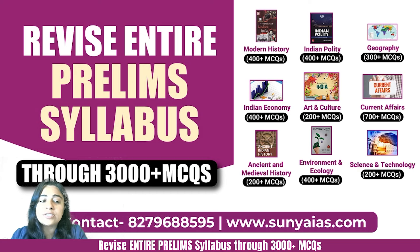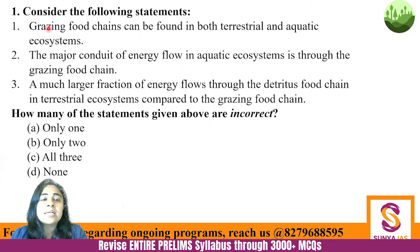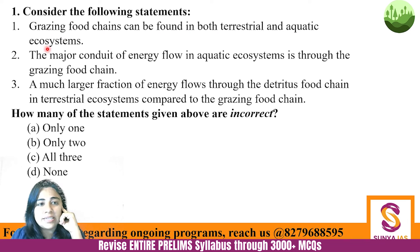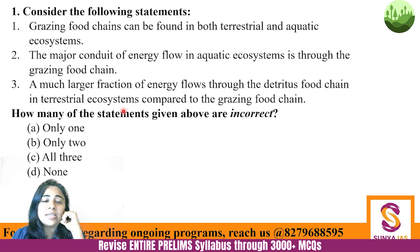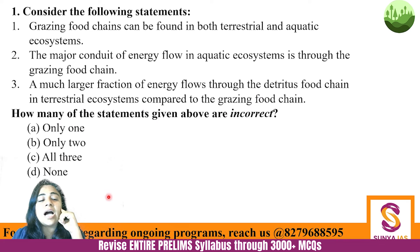Now let's start with the very first question. Consider the following statements: Grazing food chains can be found in both terrestrial and aquatic ecosystems. The major conduit of energy flow in aquatic ecosystem is through the grazing food chain. A much larger fraction of energy flows through the detritus food chain in terrestrial ecosystems compared to the grazing food chain. How many of the given statements are incorrect?